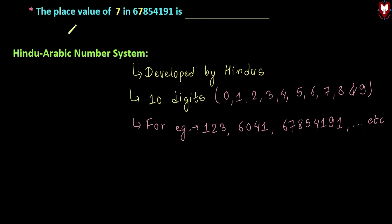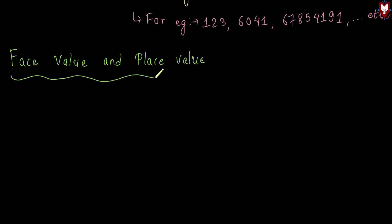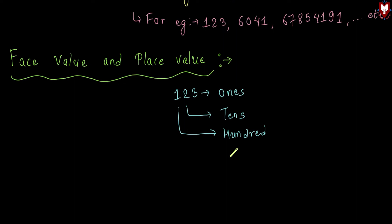Now we have another term: place value and face value. The face value of a digit is the number itself. For example, with digits 1, 2, 3: the 3 is in the ones place, the 2 is in the tens place, and the 1 is in the hundreds place.